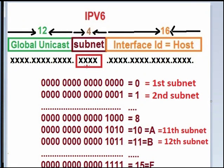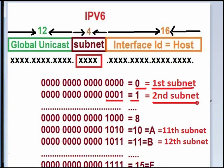Now let's look at the subnet questions. Subnet is 4 hexadecimal, meaning 16 bits — 4 into 4 is equal to 16 bits. Now, an important point: for IPv6, 0 is regarded as the first subnet, so we have to count 0 also as a subnet. So 0000 means the 1st subnet. For the 9th subnet, 1000 in binary equals 8, so that is the 9th. For 1010 in binary equals 10, which in hexadecimal form is A, and for IPv6 it is the 11th subnet.